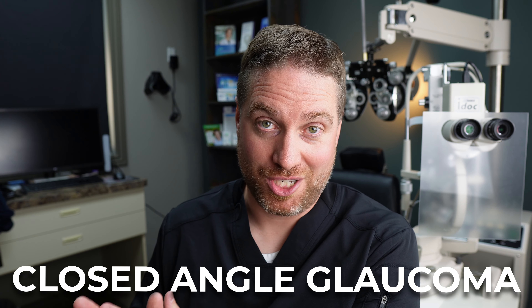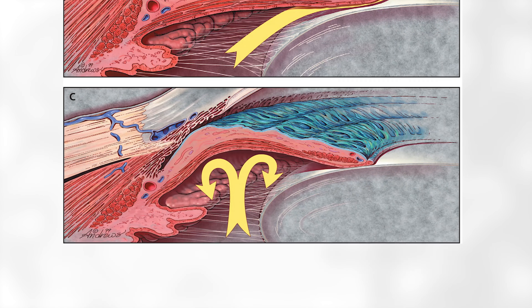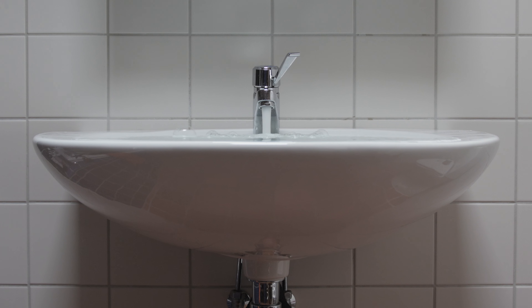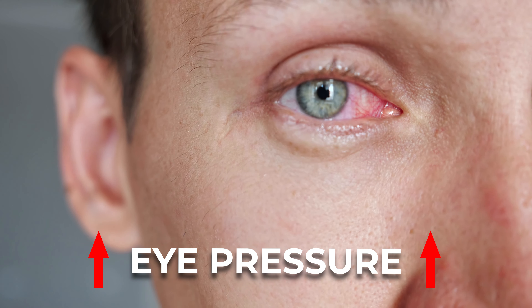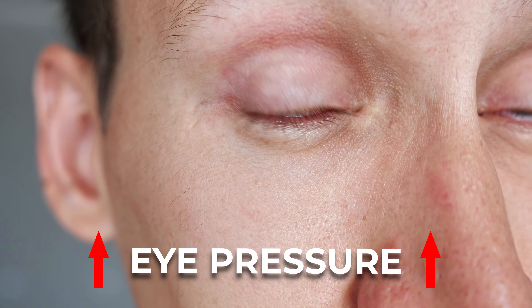Now let's talk about closed angle glaucoma. As you can imagine, the angle, instead of being open, is closed off — completely shutting off any access to the trabecular meshwork or the drain of the eye. It's almost like if you took your sink and blocked the drain, keeping the water from accessing the drain at all. That will cause the water to rise up in the sink really fast. Same thing with your eye — it'll cause your eye pressure to rise up really fast and really high.